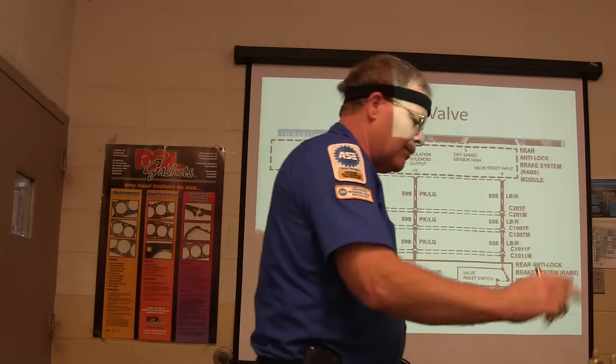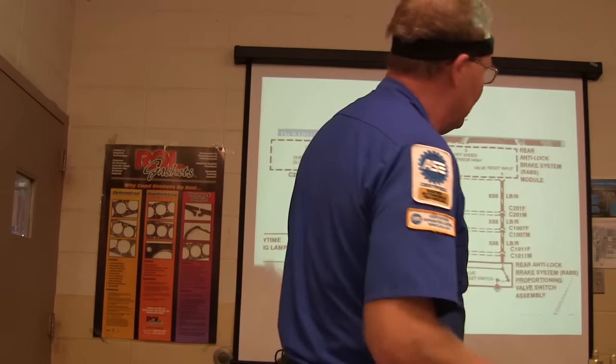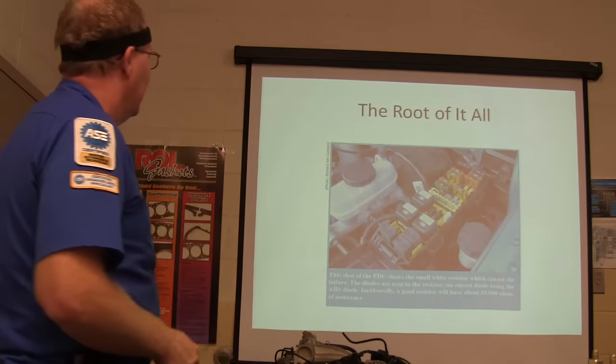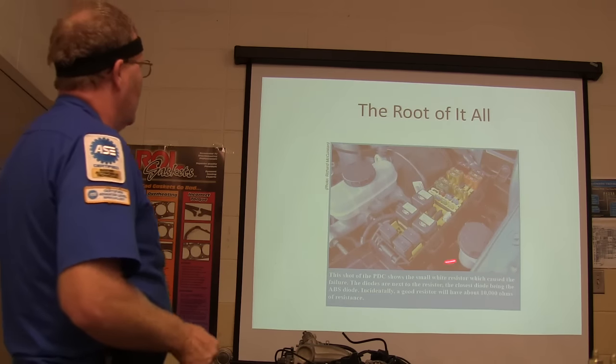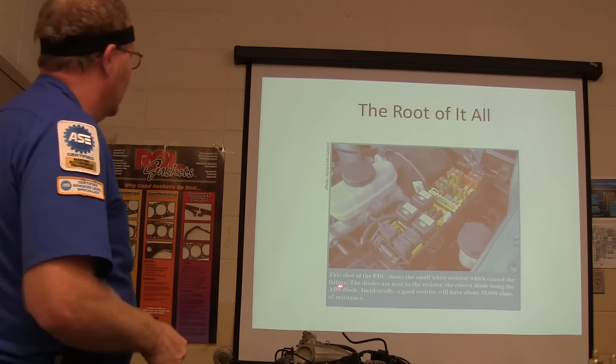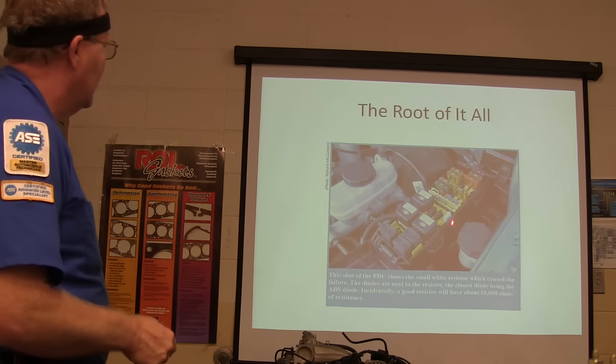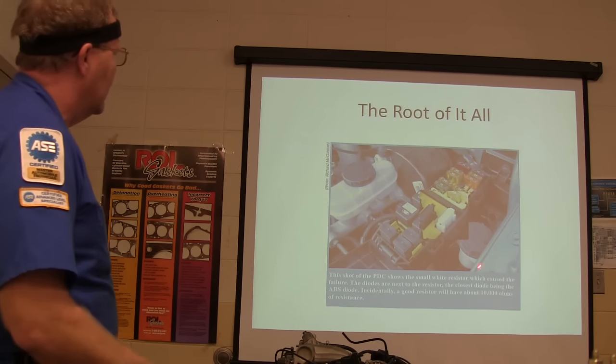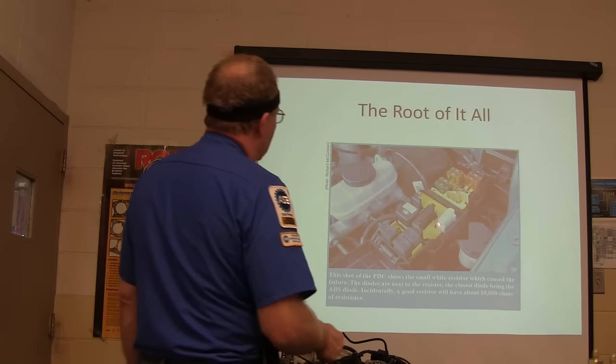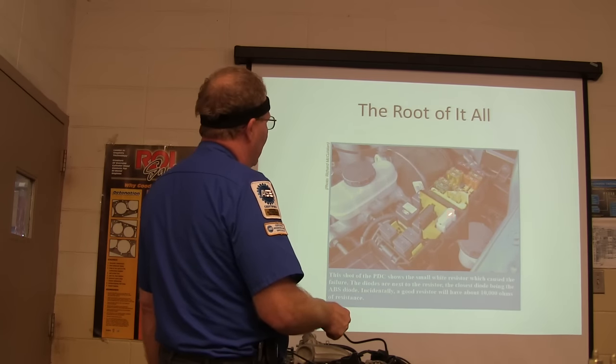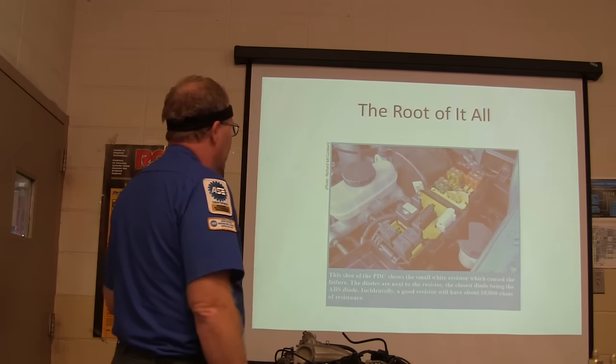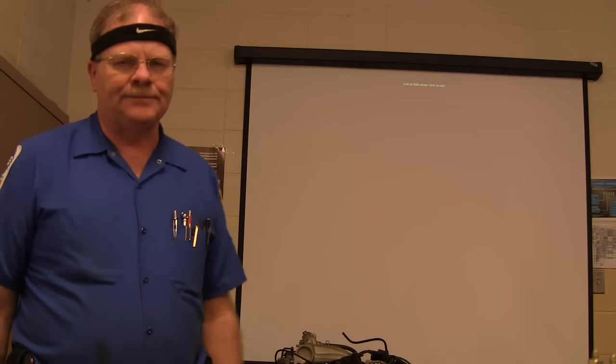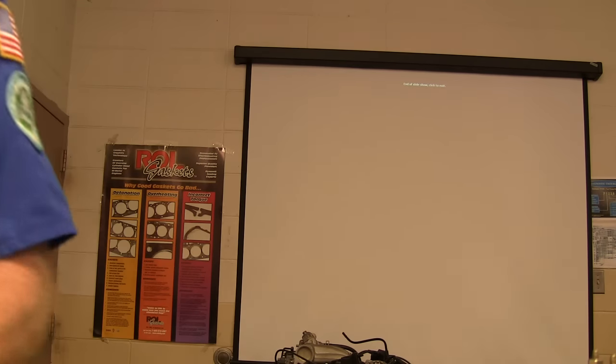Well, there's your valve reset switch. Now that valve also, when you hit the brake, if one side or the other doesn't have enough pressure, it does that. Now there's a little white resistor right here that caused a failure right there. See that? The closest diode is the ABS diode, but that one right there is that resistor. And a good resistor will have about 10,000 ohms. And the way that it works, I meant to have another picture on it. That must have gone past a slide or something.